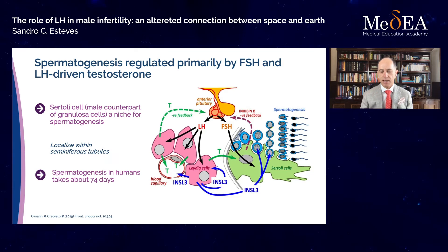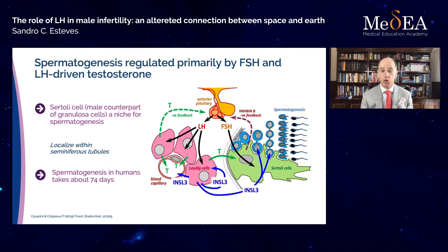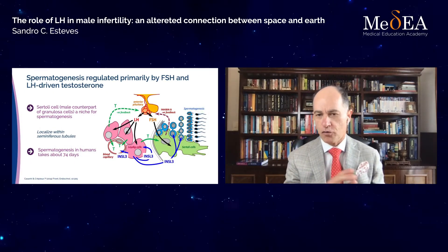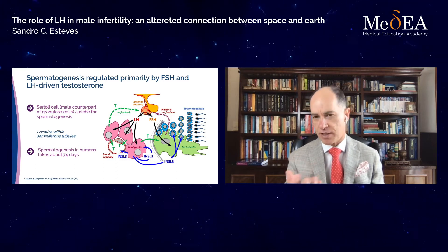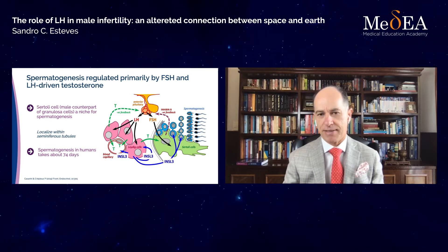In this illustration, you see the pituitary, you see the gonadotropins, and then LH acts on the Leydig cells to make testosterone. Testosterone then goes through the bloodstream and enters the Sertoli cells, which is the place where spermatogenesis takes place.